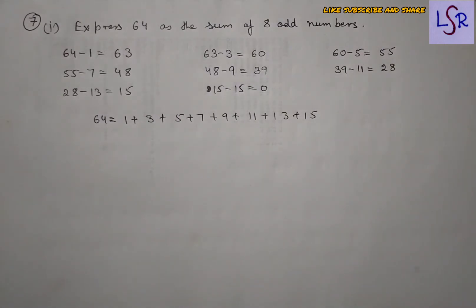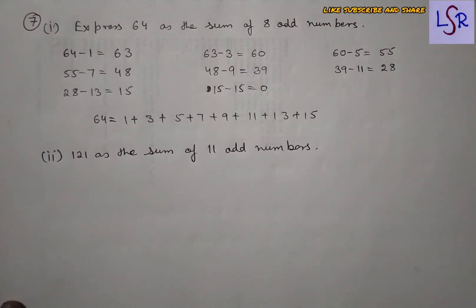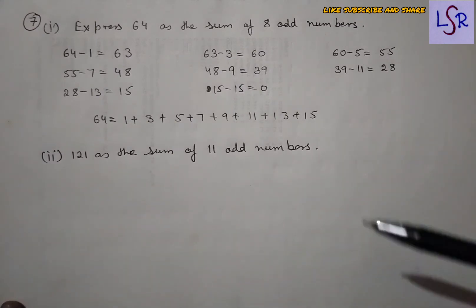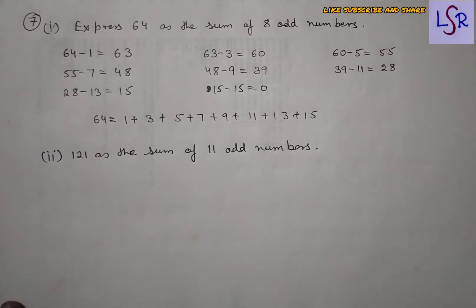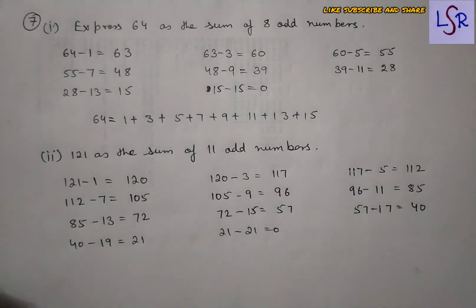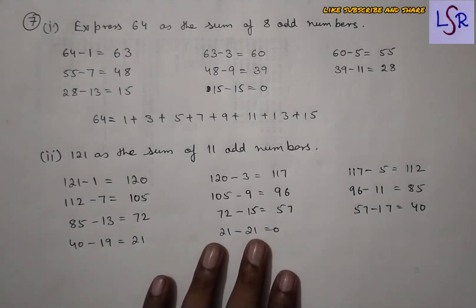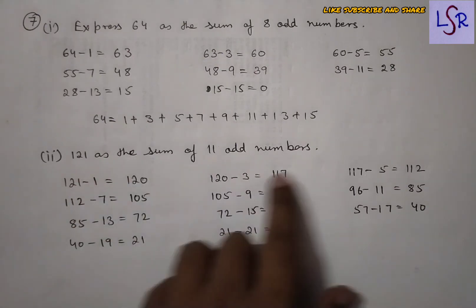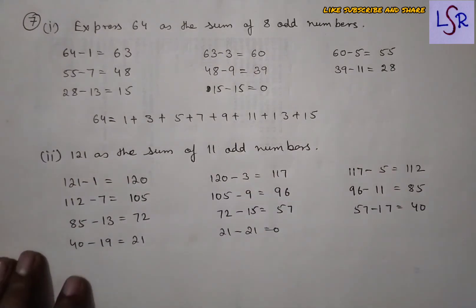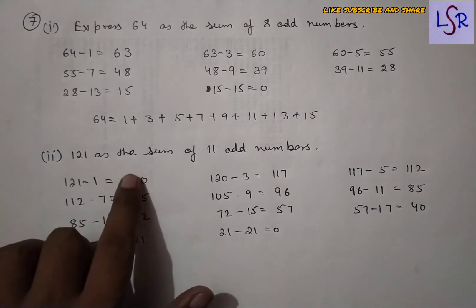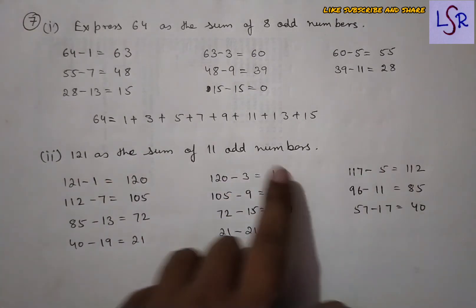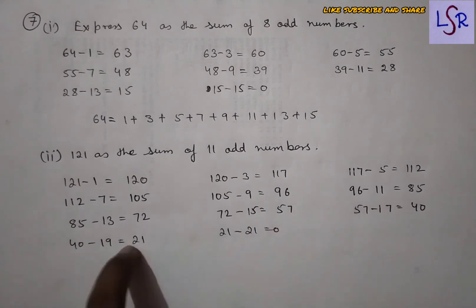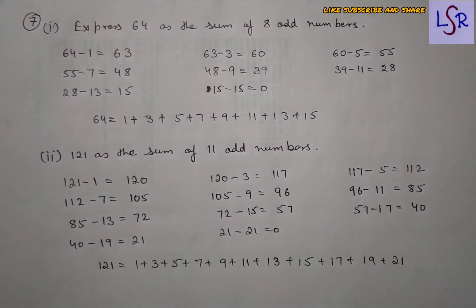For the second part, we represent 121 as a sum of 11 odd numbers. We continue subtracting successive odd numbers starting from 1, 3, 5, 7, 9 and continuing until 21, reaching 0. We used 11 numbers in total, so 121 is expressed as the sum of 11 consecutive odd numbers starting from 1.